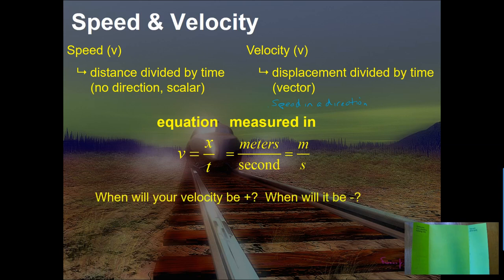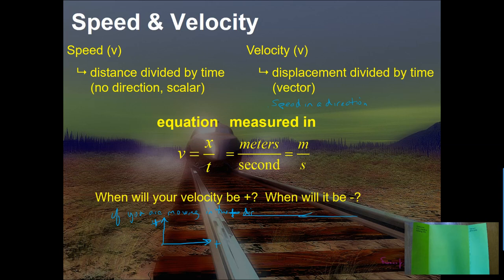When will your velocity be positive and when will it be negative? It will be positive if you are moving in the positive direction — if I'm moving this way or this way, both of those will be positive motions in the positive up or positive X direction. When will it be negative? Obviously if you're going the other way — heading in the negative X direction or the negative Y direction, it's going to be negative.